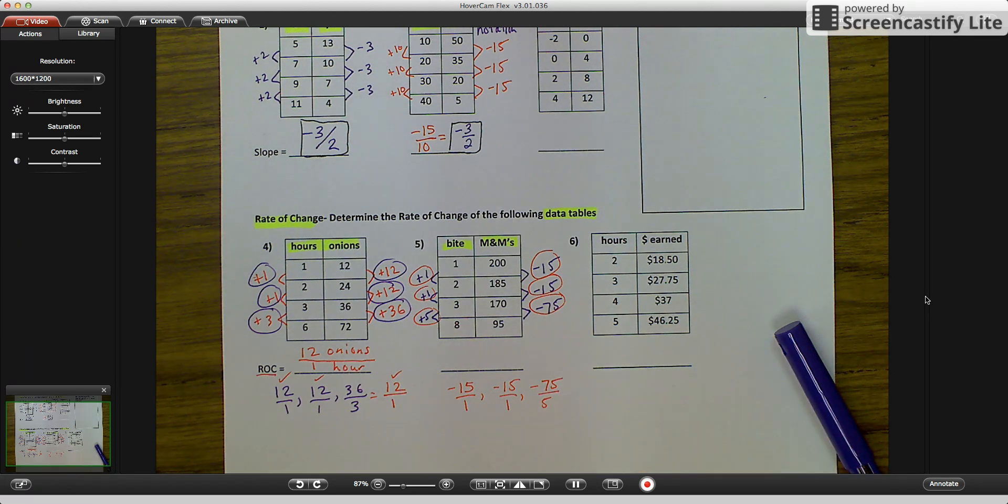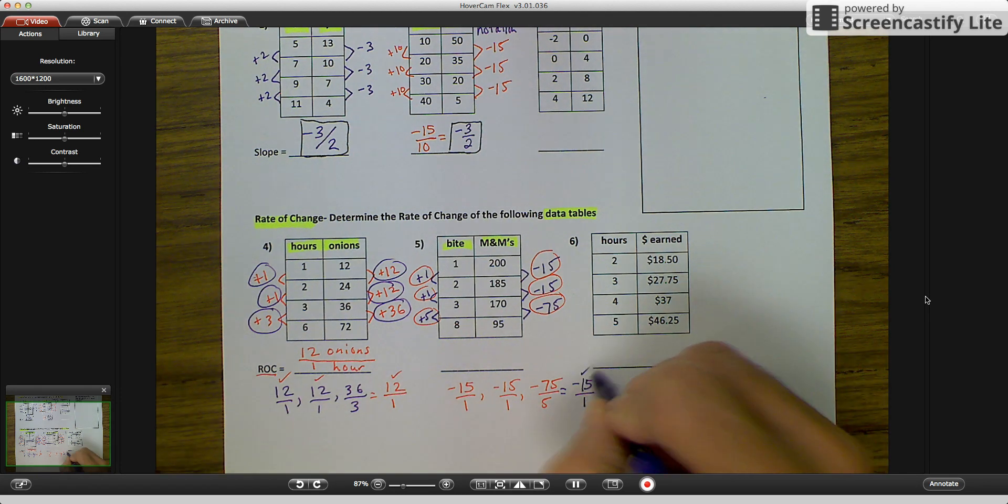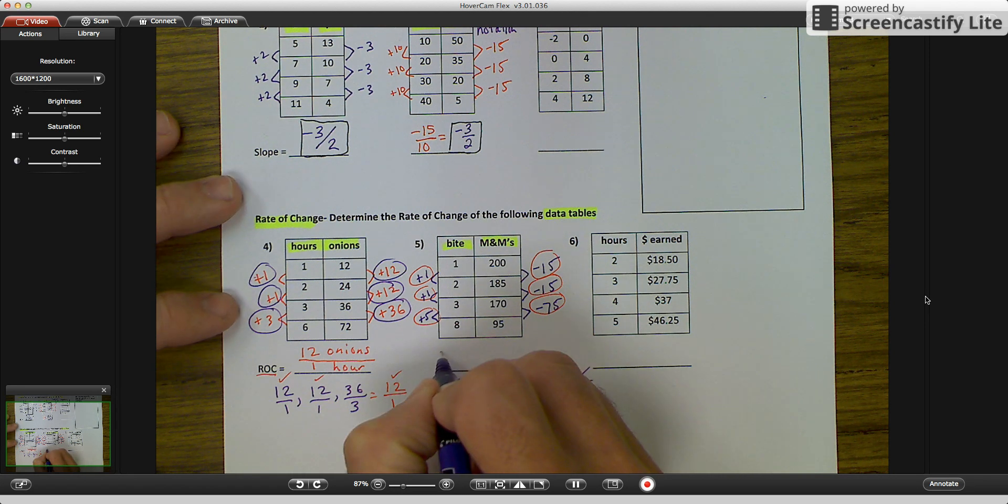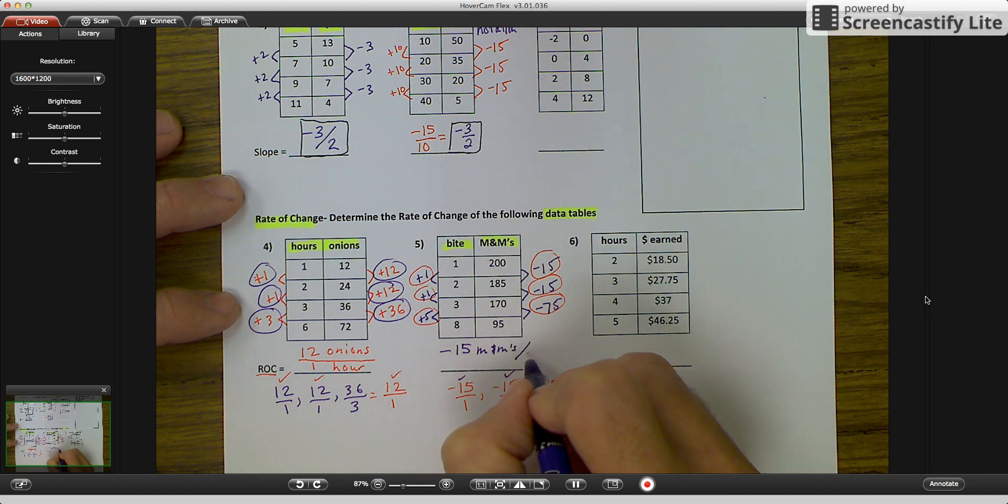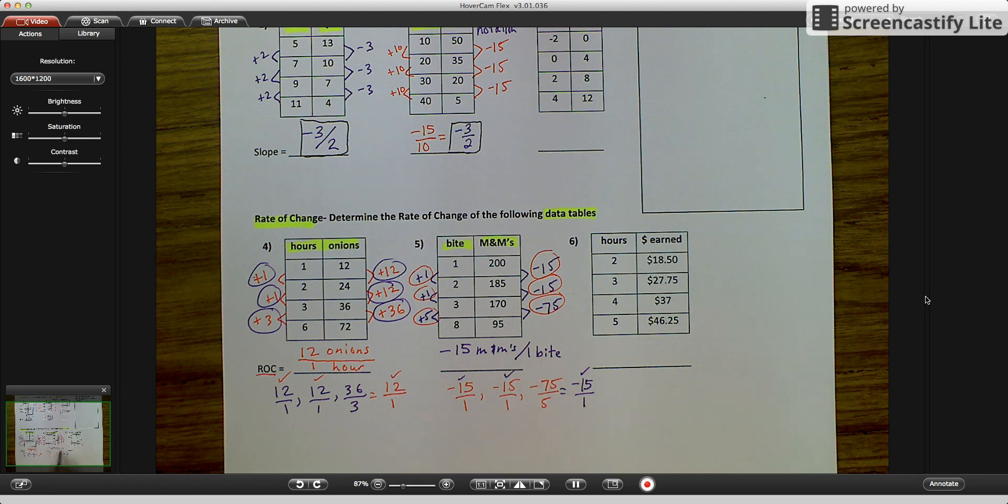My third set, negative 75 over positive 5. And again, when I go to reduce this one, negative 75 divided by 5, I would recognize that it is negative 15 over 1, because you're going to reduce that fraction, divide by 5. And again, negative 15 over 1, negative 15 over 1, negative 15 over 1. We have negative 15 M&Ms for every 1 bite. Just a different way to write it. You could write it as a fraction over here, or you could write it like this.